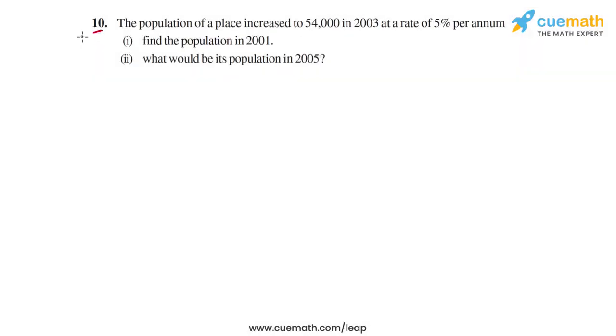Question 10 of this exercise is on population growth. Here's what it says. The population of a place increased to 54,000 in 2003 at a rate of 5% per annum. Then it says find the population in 2001, and it also says what would be the population in 2005.